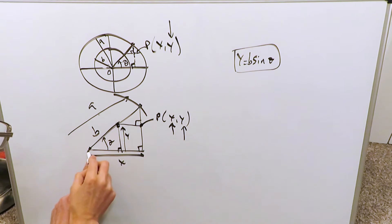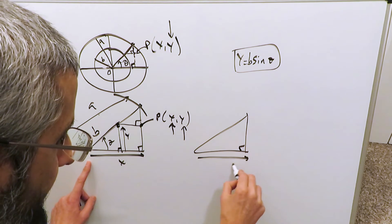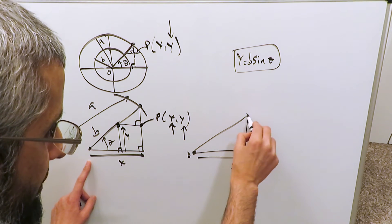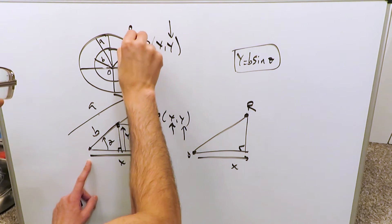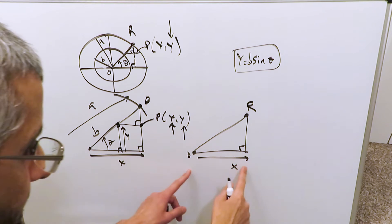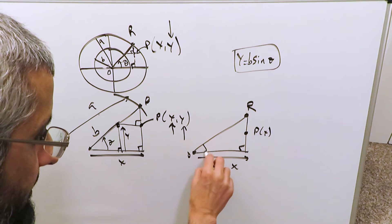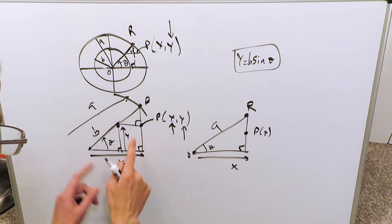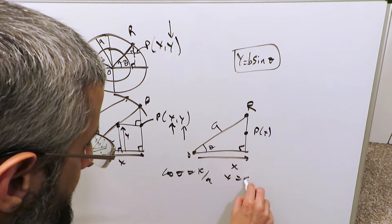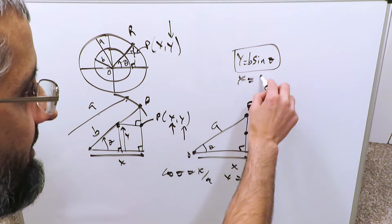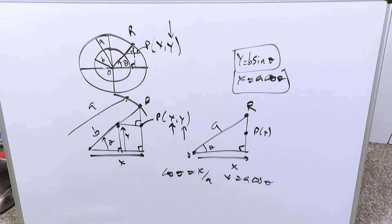Now let's do the x. When I'm looking at x I'm looking at the large triangle. Here's a certain dimension x, here's my origin, and here's a point on the outer circle — we'll call this point r. If I can determine the x dimension over here it will translate to the x coordinate of point p. I have a certain angle theta and a certain hypotenuse a. Cosine theta is equal to x over a, so x is equal to a·cos(θ). There's my next parametric equation. The two parametric equations are developed.